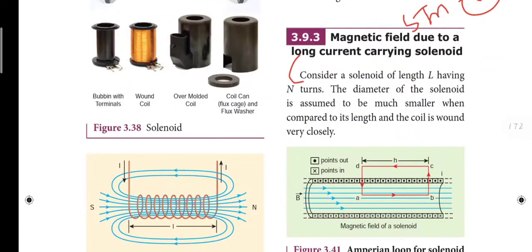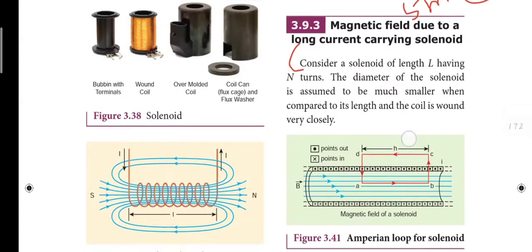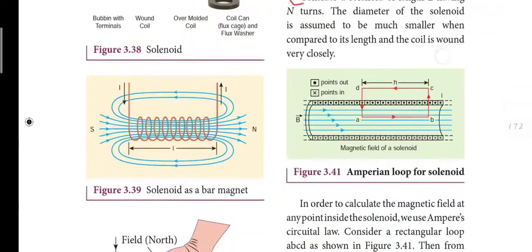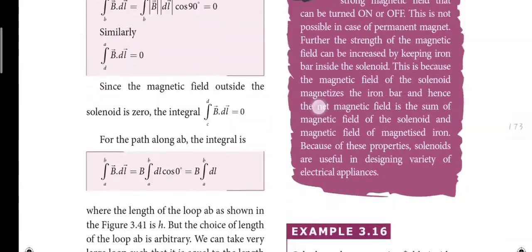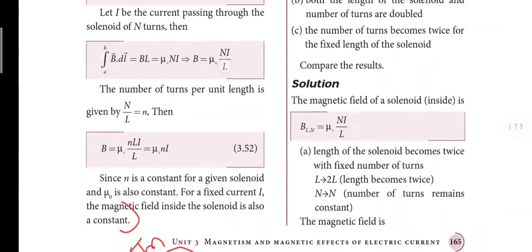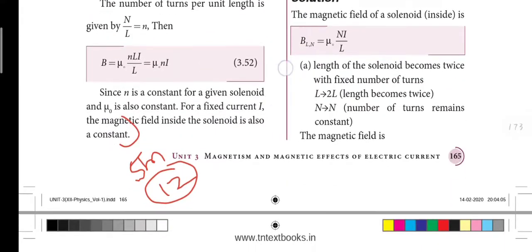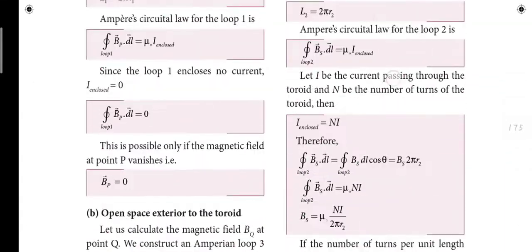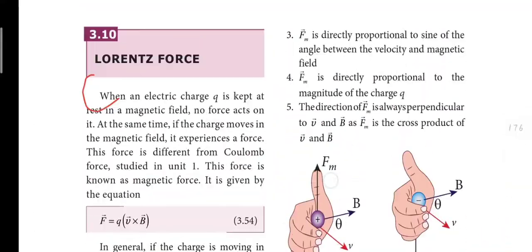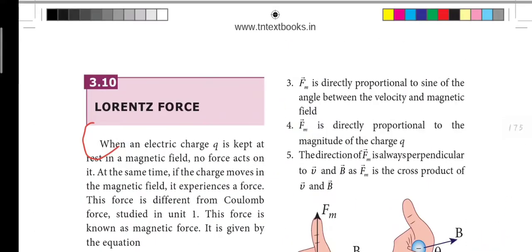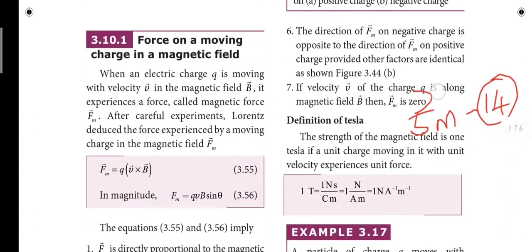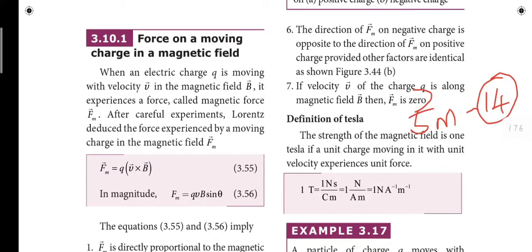Next, Ampere's law applied to a solenoid gives the magnetic field inside — this is the 12th question and is important. The equation is key. Also, the magnetic Lorentz force and the law of force have been written — this is a 14th five-mark question.